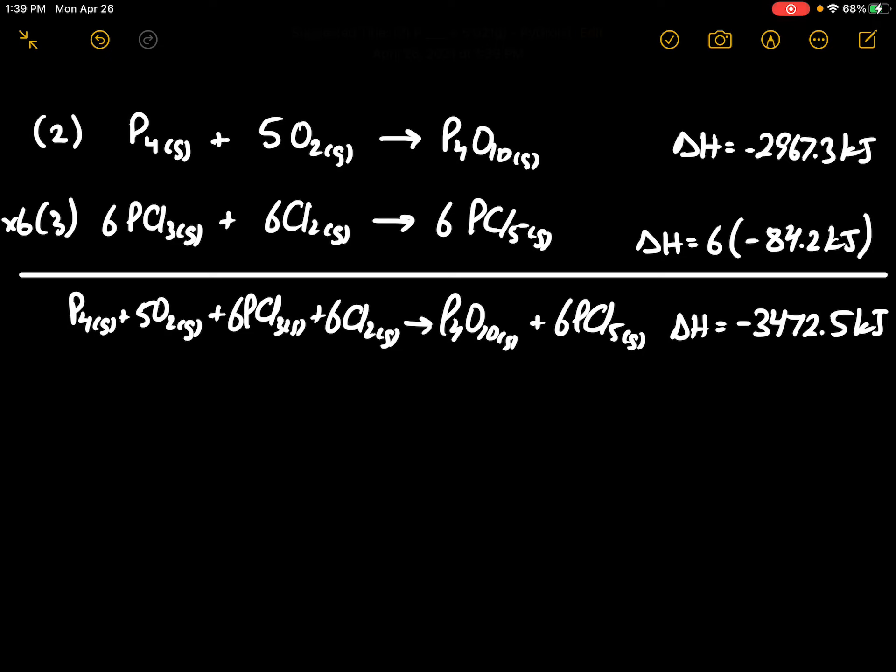Then to this, we're going to add equation 4, but we're going to take equation 4 and multiply it by 10. Actually, before we do that, we're going to flip this equation around.